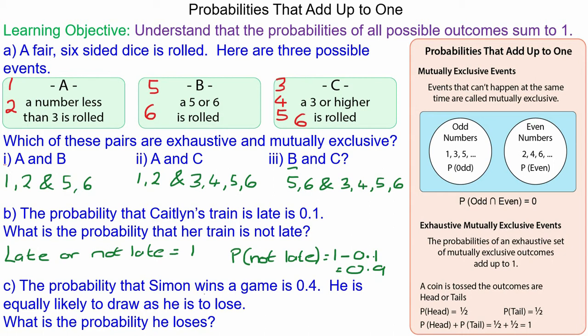The probability that Simon wins a game is 0.4, and it is equally likely that he has to draw as he has to lose. So the probability of him not winning is 1 take away 0.4, which is 0.6, because they are mutually exclusive.